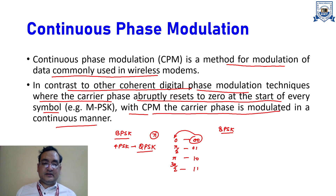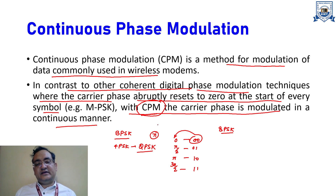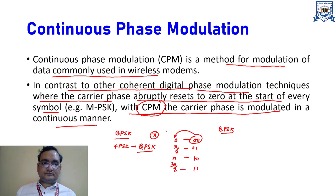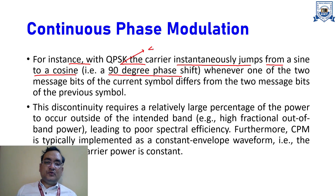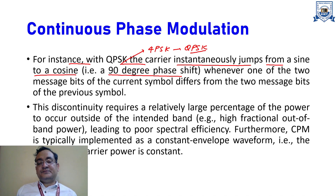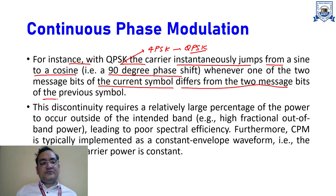CPM is not a single modulation scheme — it is a broad category. MSK, for instance, belongs to CPM. With QPSK, the carrier instantaneously jumps from a sine to a cosine wave, representing a 90-degree phase shift. The phase abruptly jumps from zero to 90 degrees whenever one of the two message bits of the current symbol differs from the two message bits of the previous symbol.